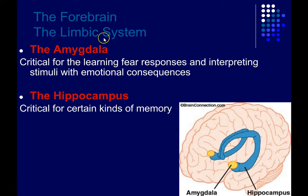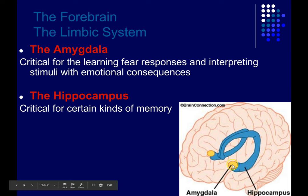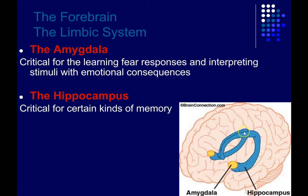Also in the forebrain is the limbic system. Some of the more important structures we'll address later are the amygdala and the hippocampus, shown in blue here. The amygdala is critical for learning certain kinds of fear responses and interpreting stimuli with emotional consequences more generally. The hippocampus is important for certain kinds of memory — mainly encoding long-term memory for specific events and experiences. The left and right hippocampus come together to form the fornix, whose axons pass down to the mammillary bodies.